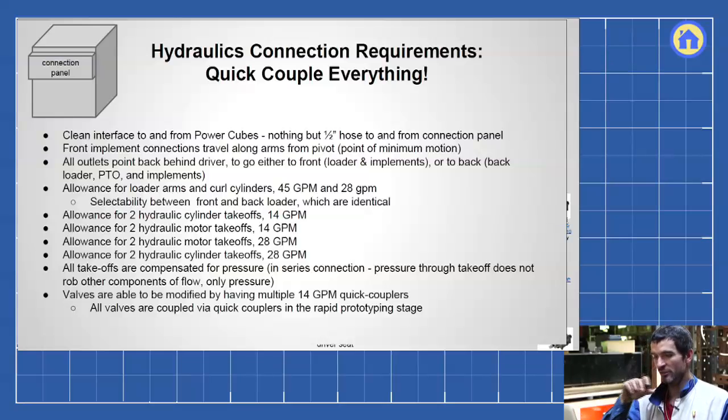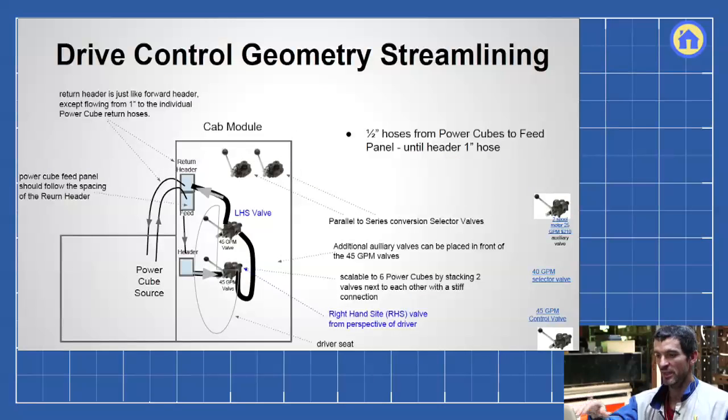Here's an important consideration for just the general design. You have the power cubes in the back, you've got the cab module. How do you keep track of all the hoses because the number is probably going to be like 50 to 100 different hoses. It's a big crow's nest of hoses.